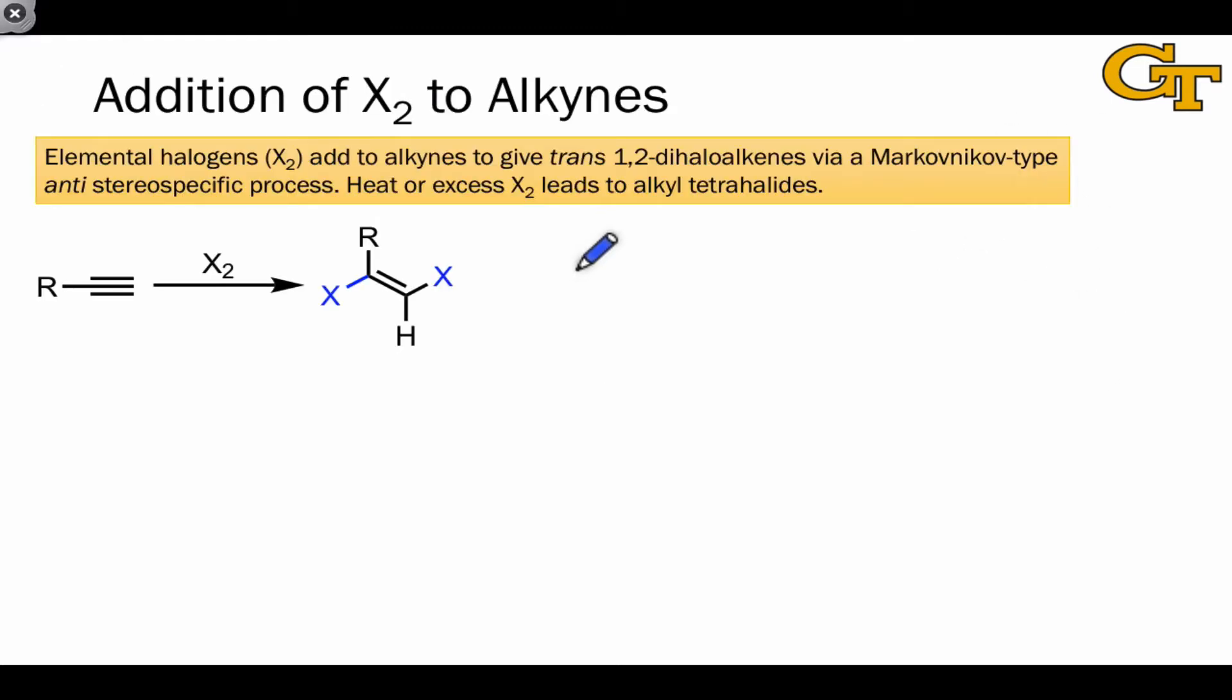Elemental halogens Br2 and Cl2 add to alkynes to give trans-1,2-dihaloalkenes. This occurs via a reaction with Markovnikov selectivity and anti-stereo-specificity, which gives rise to the transalkenes.